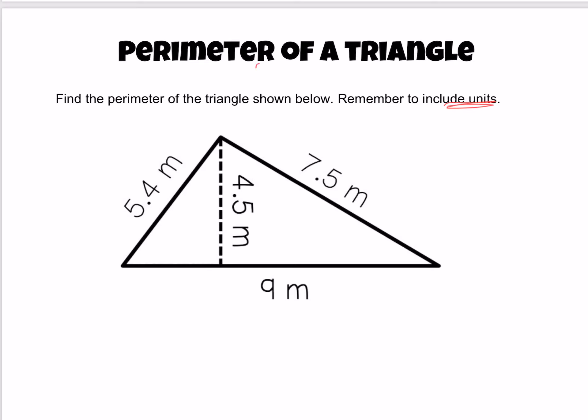Perimeter is the distance around a shape. When finding perimeter, we just add all the sides.